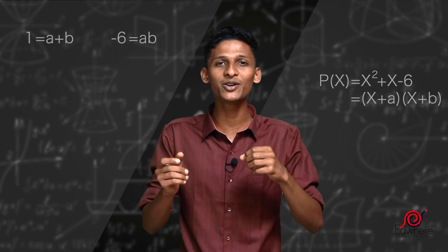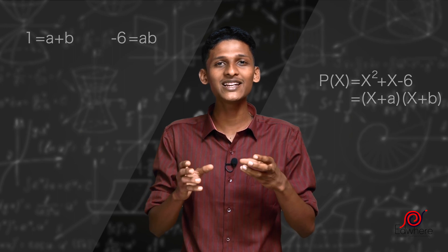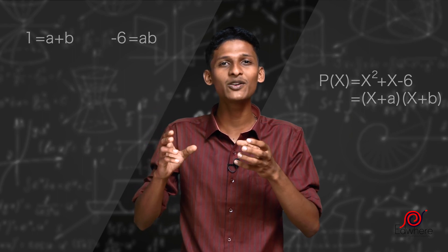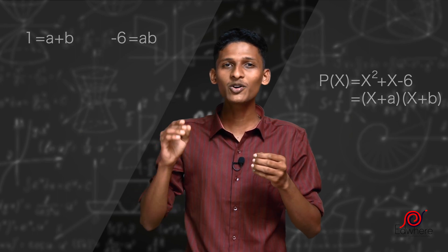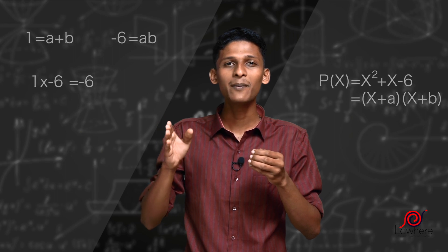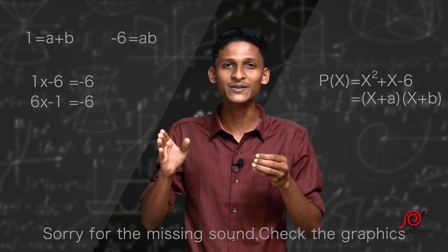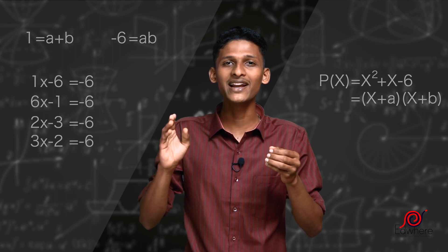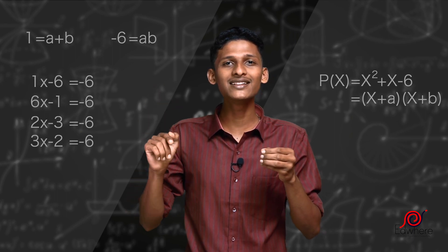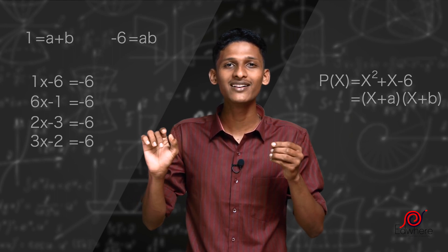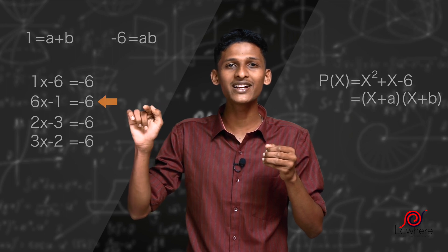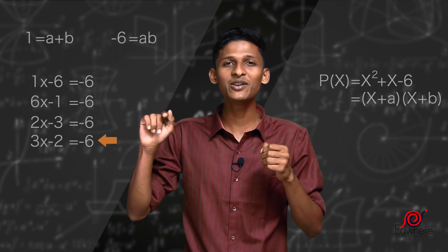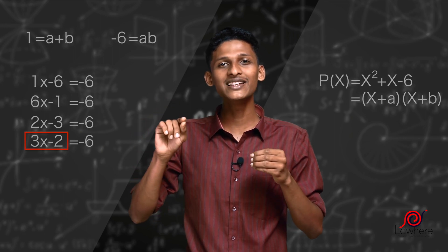Let's solve for a and b. We need factor combinations of −6: 1 × (−6) = −6, 2 × (−3) = −6, 3 × (−2) = −6. Now we have these combinations. We add each pair: 1 + (−6) = −5, 2 + (−3) = −1, 3 + (−2) = 1. The pair that gives sum 1 is 3 and −2.